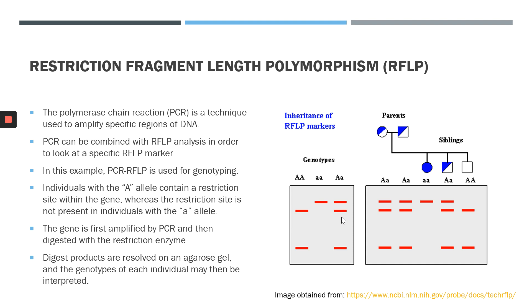RFLPs can also be used in genotyping. In this example, the polymerase chain reaction has been combined with RFLPs. PCR is used to amplify a specific region of the genome or a particular gene. Here, alleles of a particular gene have been isolated by PCR. Individuals with the AA allele have a restriction site present in the allele; however, individuals with the recessive allele (aa) do not have a restriction site present, so the sequence is not cleaved when individuals have a recessive genotype.